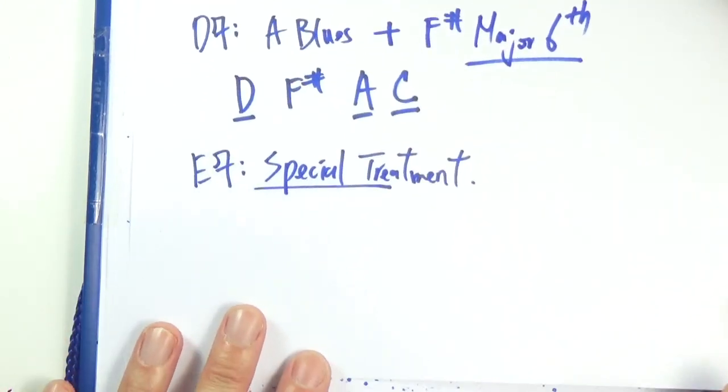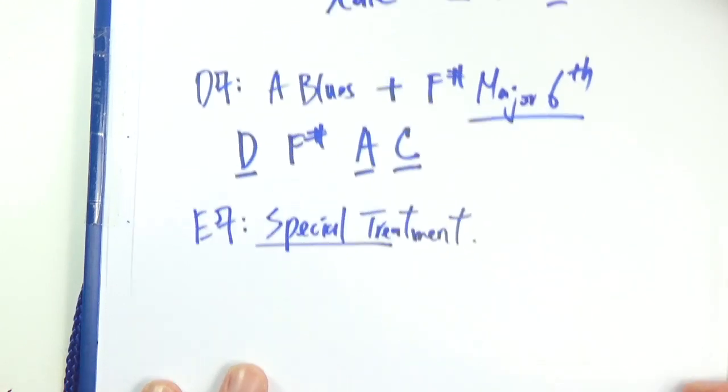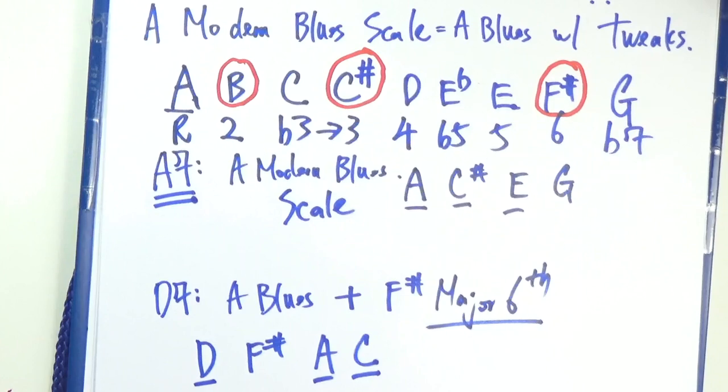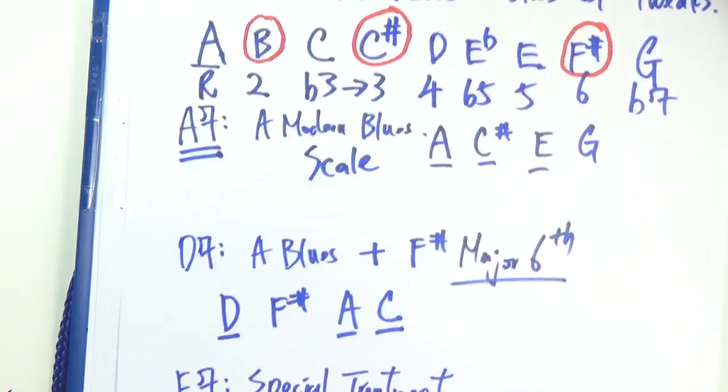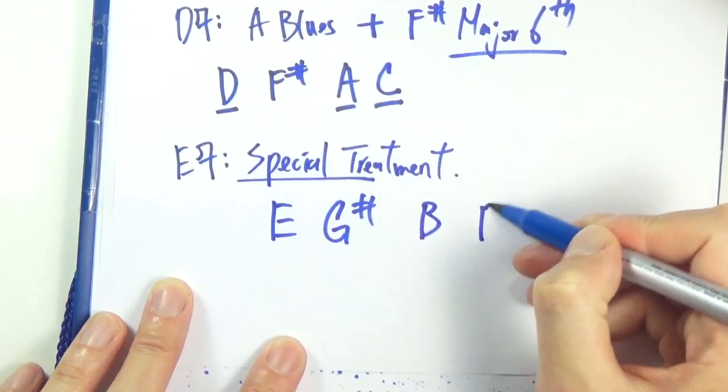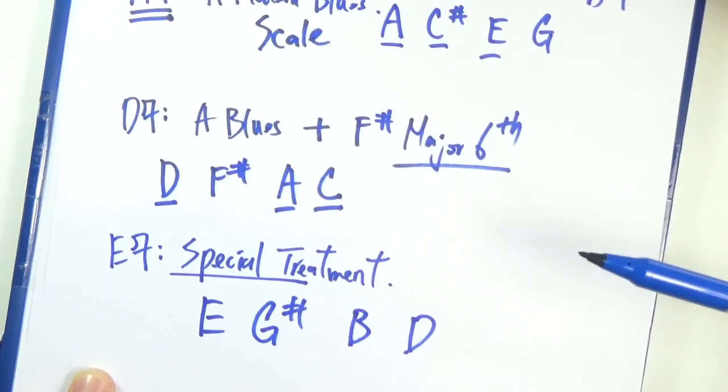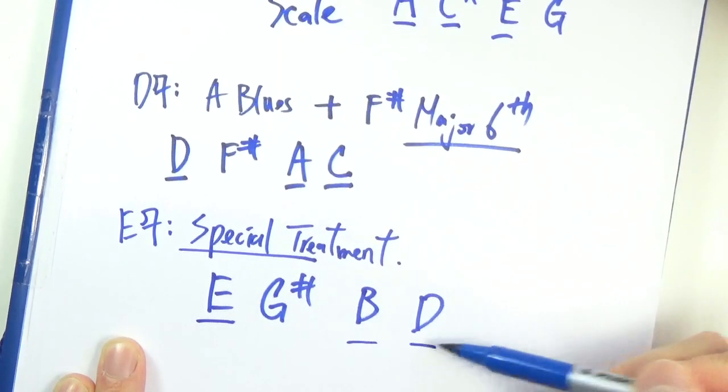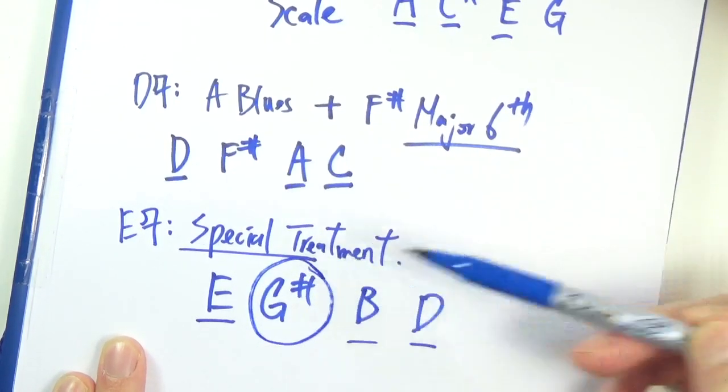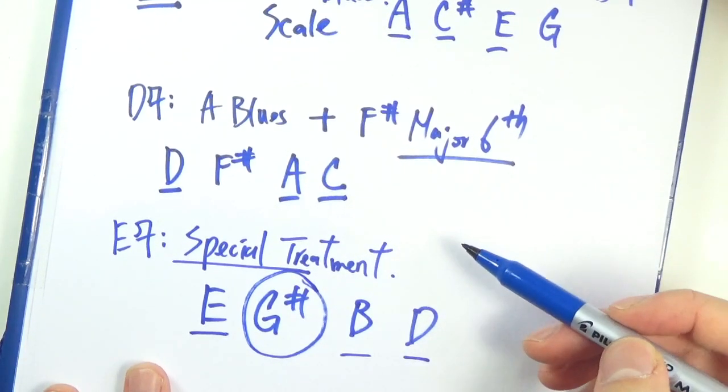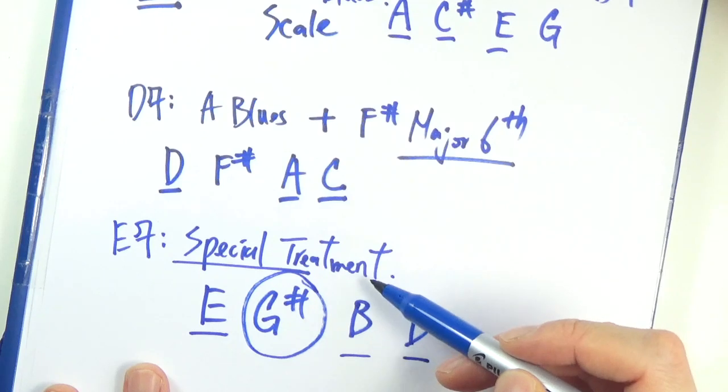For E7 chord, we are going to need some special treatment. If you look at the A blues scale one more time and compare that to the chord tones of E7 chord, you are going to discover that we still lack the necessary chord tones of E7. So we have E, right? We have B. We have D. We still don't have the G sharp. That's very depressing. So we are going to need some special treatment here.